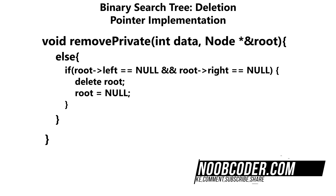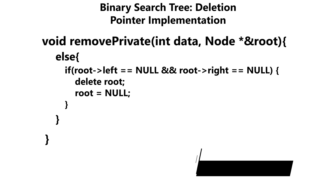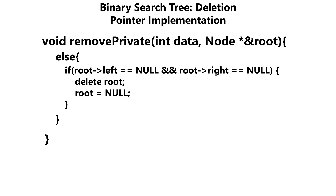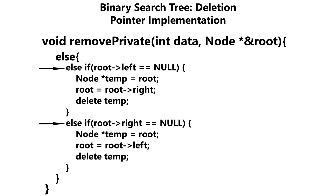Now if we reach this else statement, that means we successfully found a node that we want to delete. There are three different kinds of nodes we can delete. The first kind is a leaf node — if we reach this if statement, we test to see if the node has any children. If it doesn't, we can simply delete the node and set the pointer to null. If we reach either of these else if statements, that means the node only has one child. If the node's left child is null, that means it has a right child, so we set a temporary pointer to the node we want to delete, advance our root pointer to point to the right child, and finally delete the node.